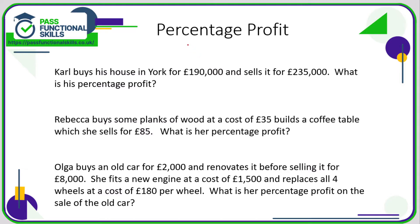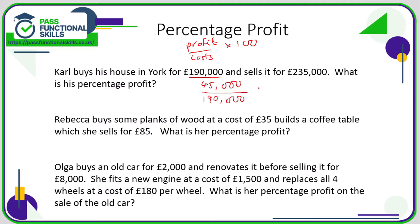Now, percentage profit. The percentage profit is the total profit divided by costs, multiplied by 100. Carl buys his house for £190,000 and sells it for £235,000. The profit is £235,000 minus £190,000, which is £45,000. His costs were £190,000, so we divide £45,000 by £190,000 and multiply by 100, giving 23.68 — let's round that to 24%. So he's made a 24% profit.